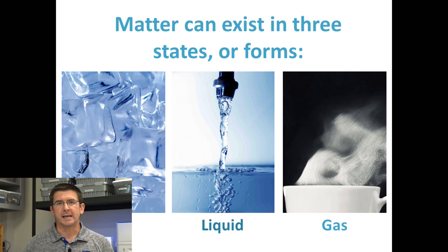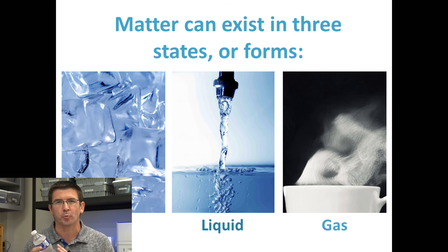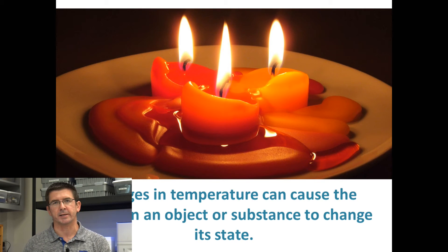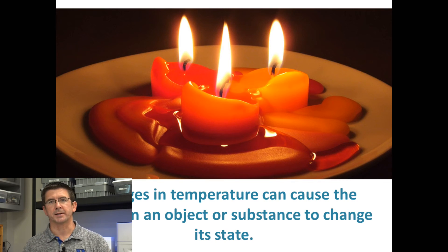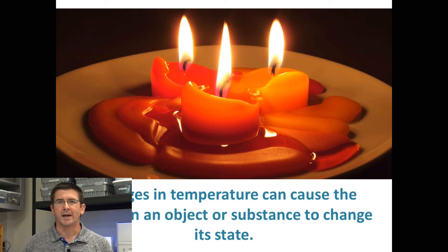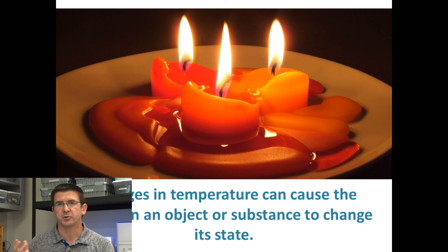Almost every type of matter can exist in any of these three states. The water in this bottle can exist as a solid, a liquid, or a gas — right now it's in the state of a liquid. We can cause changes in state by changing the temperature of an object. If I put the water bottle in the freezer and lower its temperature, it would change from a liquid to a solid. If I put it in a pot and boiled it on the stove, it would change from a liquid to a gas. These changes in matter are often caused by changes in temperature.